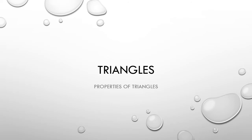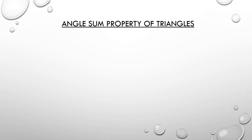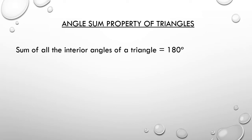First property: the angle sum property of triangles. The sum of all the interior angles of a triangle is equal to 180 degrees. Now let us check it out with a triangle. Draw a triangle and name it A, B, and C.